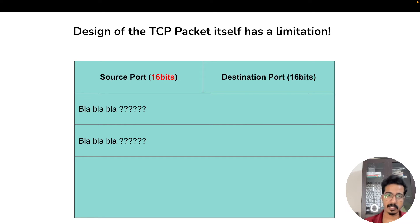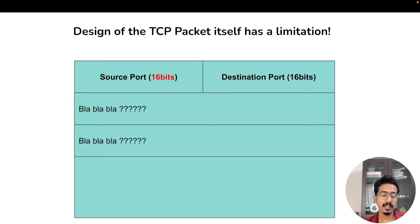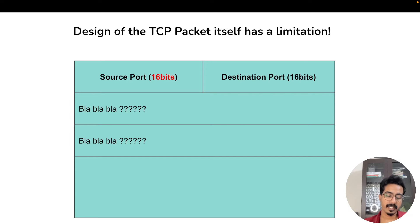Since the destination port is fixed and the destination IP is fixed, the source port varies per connection. For the first connection it might be port 5001, then 5002, and so on. So the source port on the client side becomes a significant limitation.